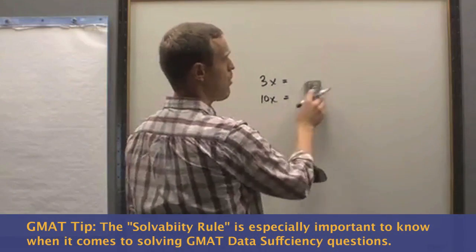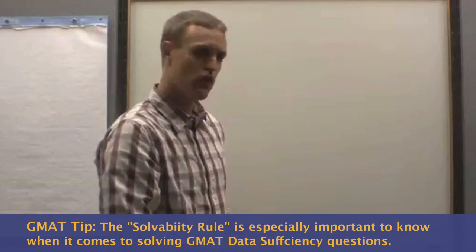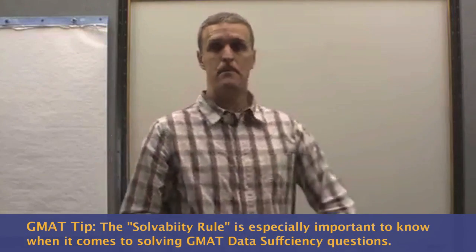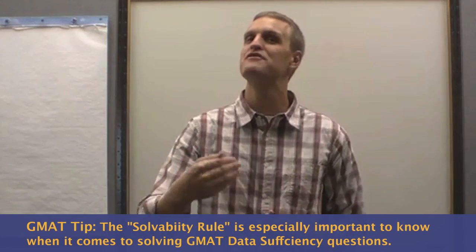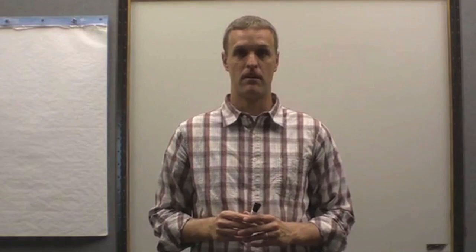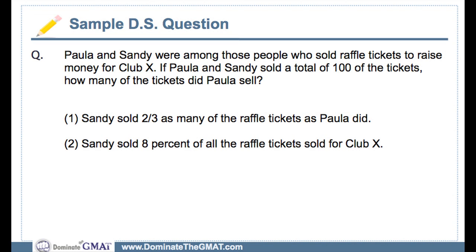Now, this is especially important and useful on data sufficiency because oftentimes on data sufficiency, we're asked to determine whether or not we have enough information, whether or not we have solvability for an equation. Take a look at this example. Go ahead and press pause if you want, but here we have an example taken from the GMAT Review Official Guide.